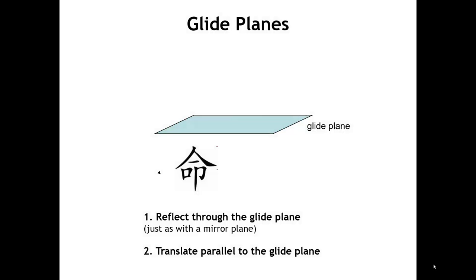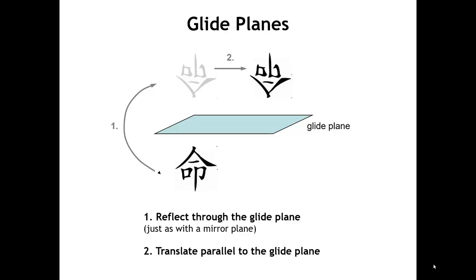A glide plane is a composite of two operations. First we reflect through the glide — it acts as a mirror. And then secondly we have a translation parallel to the glide plane. It's important to remember that the translation always has to be parallel to the plane. There are many different vectors that are parallel to that glide plane, and that leads us to different kinds of glide planes.